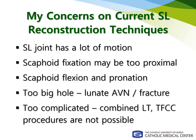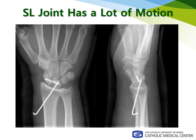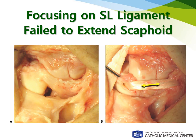There have been several concerns on current scapholunate reconstruction procedures. Naturally, there are more than 30 degrees of rotation motion happening between the scaphoid and lunate, and that is why scapholunate repair is easy to fail and scapholunate fusion is difficult to achieve. Most of the procedures are focused on repairing the scapholunate ligament with a proximal scaphoid hole, which fails to extend the scaphoid. As you can see in this picture, the dorsal capsule with dorsal intercarpal ligament is widely resected and released, which might aggravate the scapholunate instability.